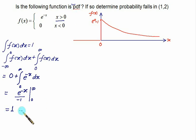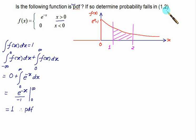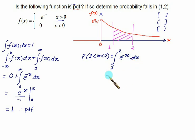This is a well-defined probability density function. In the second part we find the probability that x falls between 1 and 2 — that is, the area between x=1 and x=2. Whether the interval is open or closed doesn't matter for a continuous random variable, so P(1 < x < 2) uses the integral from 1 to 2 of e^(-x) dx.